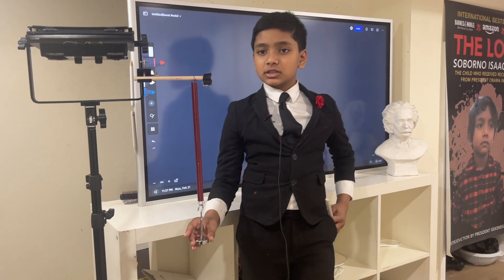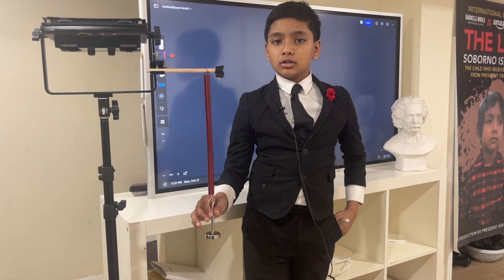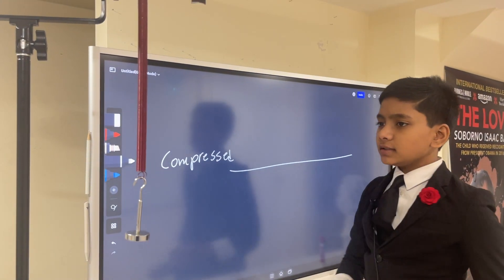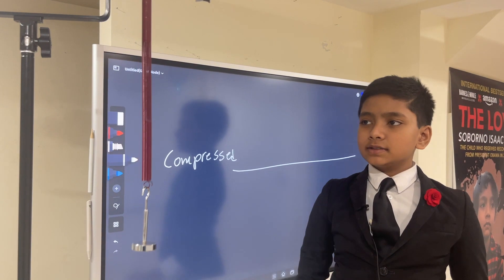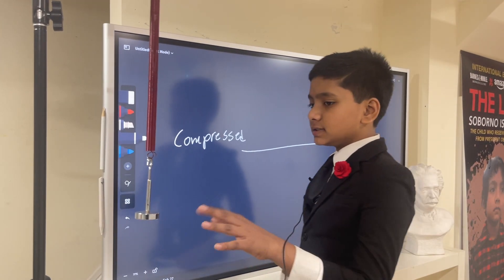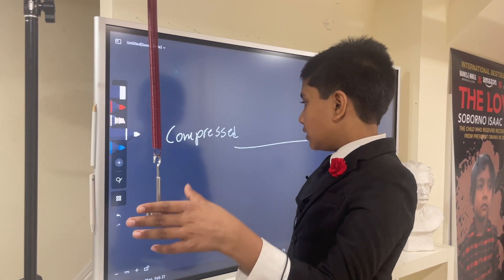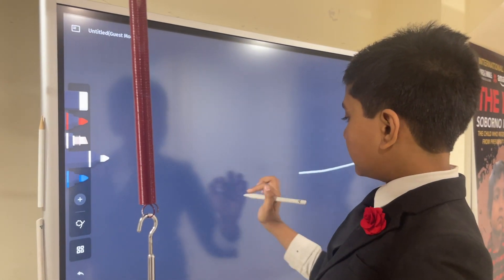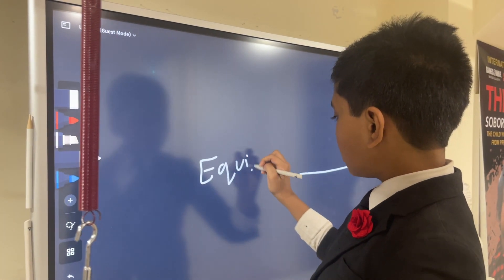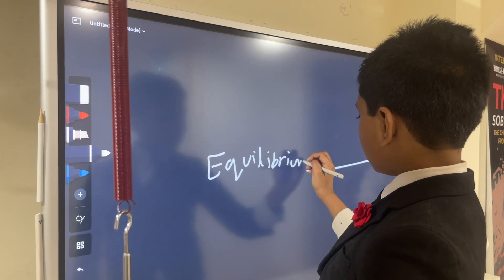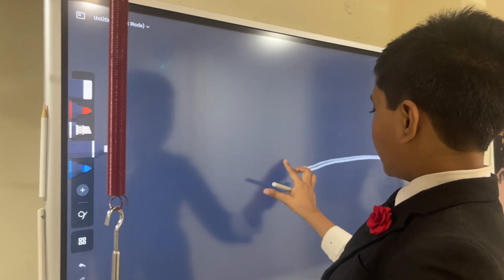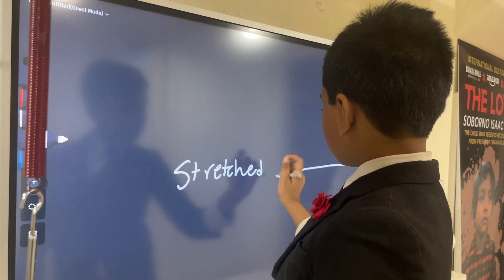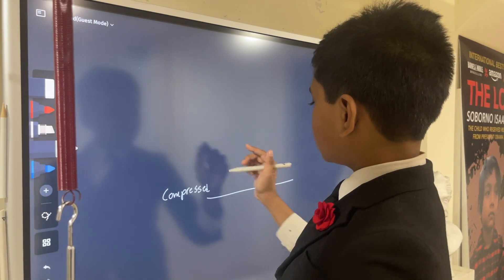Once we stretch this spring, this is an example of oscillation for anyone who hasn't watched the last video. As you can see, it goes back and forth between slight elongation and slight compression. So let's say this is the compressed state, this is the equilibrium, and this is the stretched state.